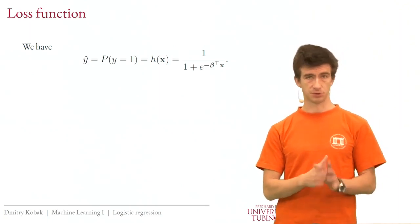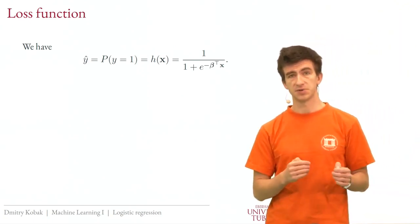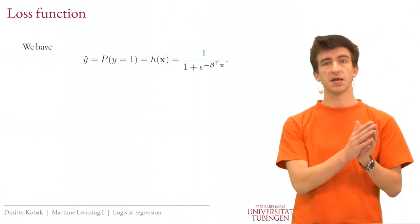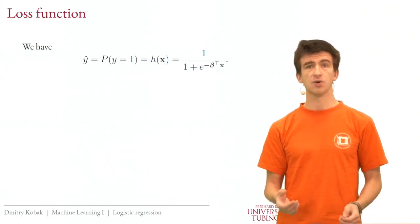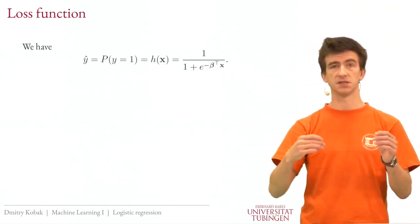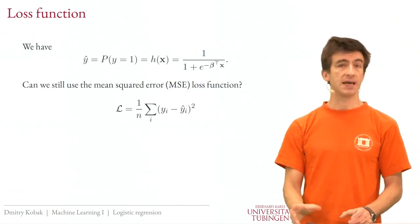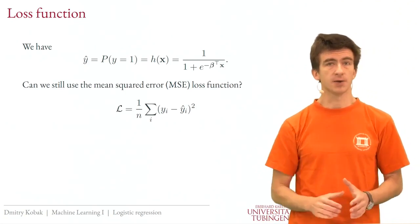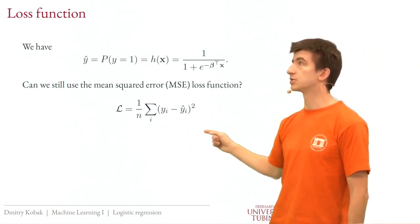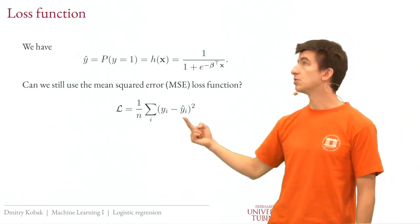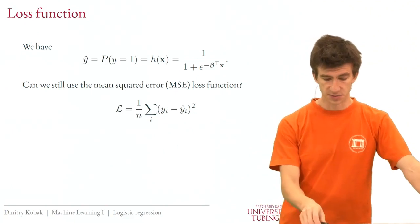Let's get back to setting up logistic regression, because we're not finished. We discussed how to obtain ŷ values from x given parameters β. The missing ingredient is the loss function — how do we judge whether a given sigmoid fits our data well? The question is: why can't we just keep using the mean squared error loss from linear regression? We can use the logistic formula for ŷ but still use MSE. Whenever y is 0, ŷ should be close to 0; whenever y is 1, ŷ should be close to 1. It seems meaningful.